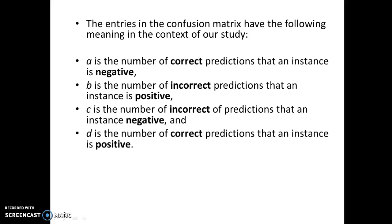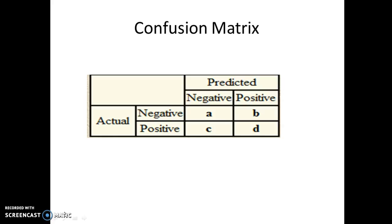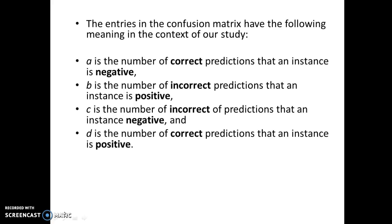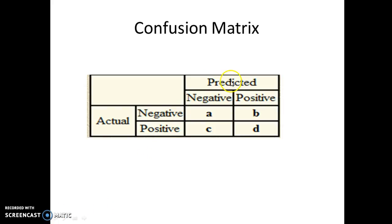The entries in the Confusion Matrix have the following meaning. A is the number of correct predictions that an instance is negative. B is the number of incorrect predictions that an instance is positive. C is the number of incorrect predictions that an instance is negative. D is the number of correct predictions that an instance is positive. Here, predicted values are in columns and actual values are in rows. A indicates the predicted value which was predicted as negative and is actually negative — a correct prediction.